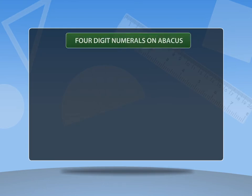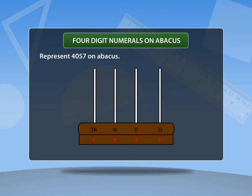Let's now learn to represent four digit numerals on an abacus. Represent 4057 on abacus. As we see that it is a four digit number, so the abacus must have four rods.